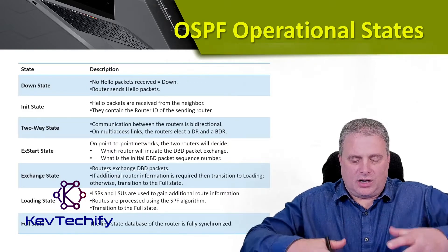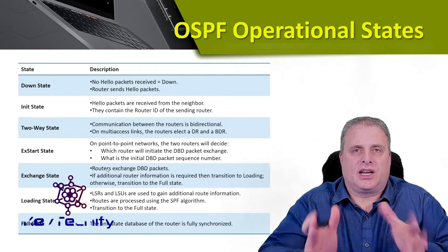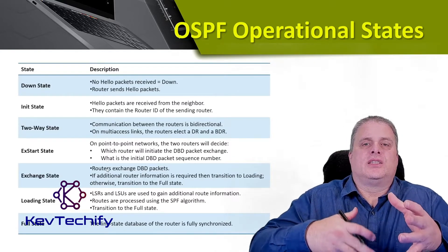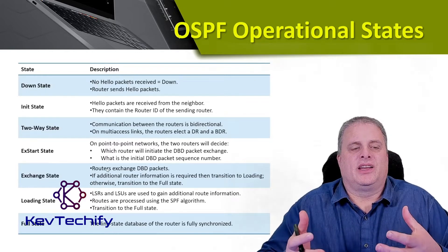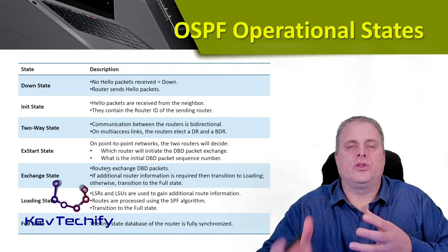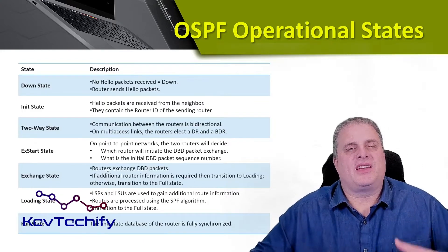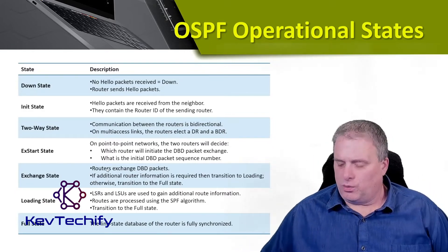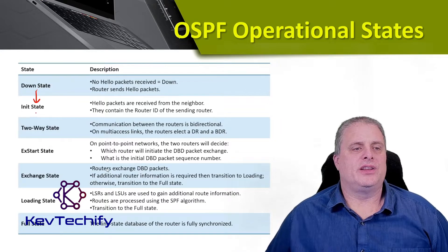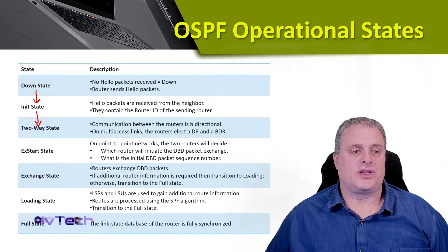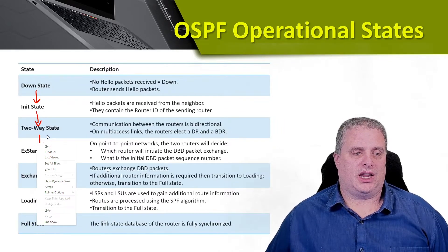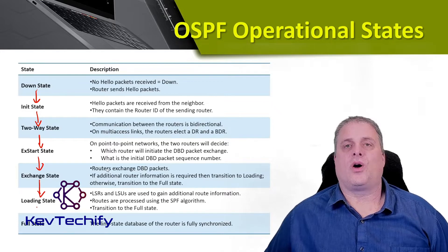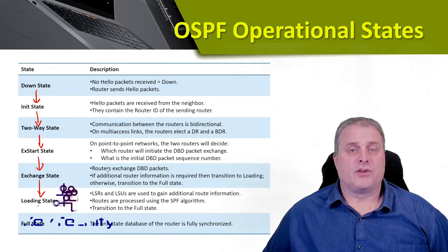As we look at OSPF, as it comes on and starts establishing on your network, it goes through seven different states. It goes through a process of starting online, not knowing anything, to a full state of knowing all the states of all the links in our entire network, which allows us to make the best path across the network. These seven states are transitional and go from one to the other: the down state, the init state, the two-way state, the x-start state, the exchange state, then the loading state, and finally, after all the information is shared and the link state database is fully synchronized, the full state.